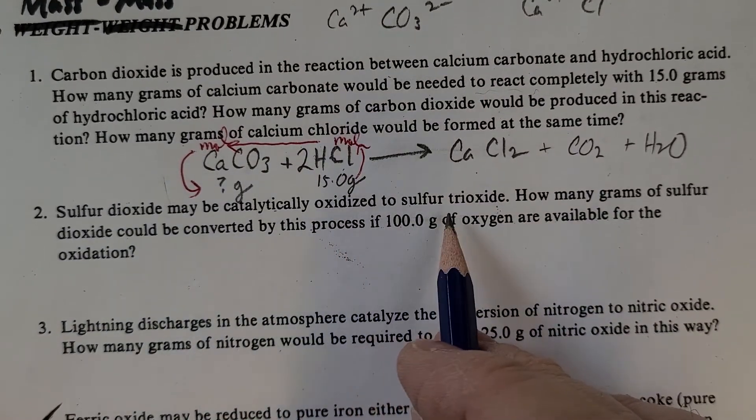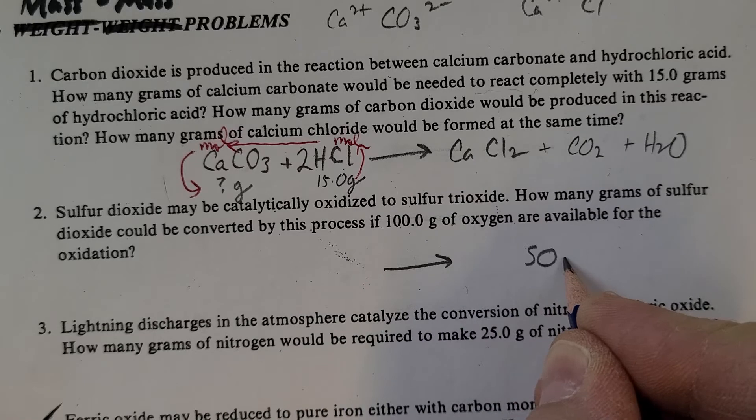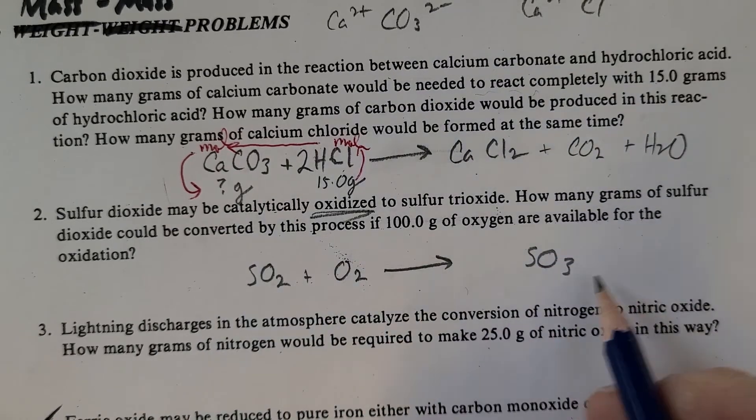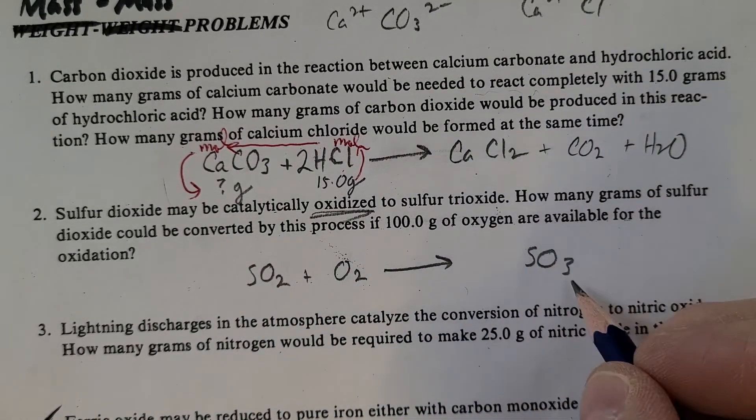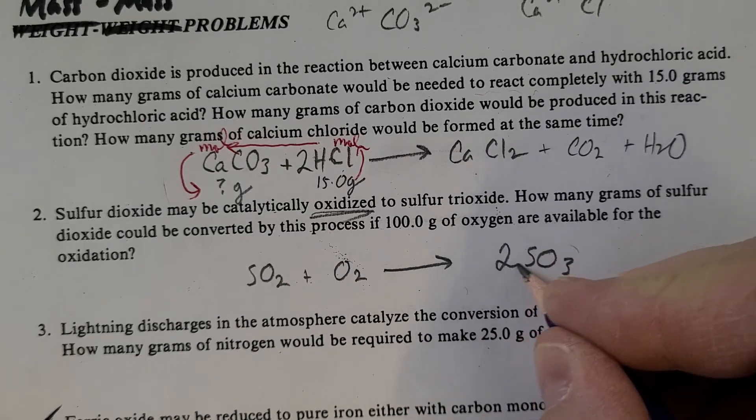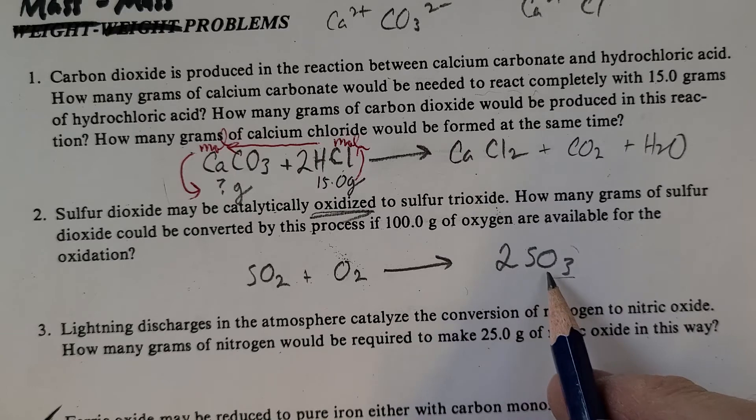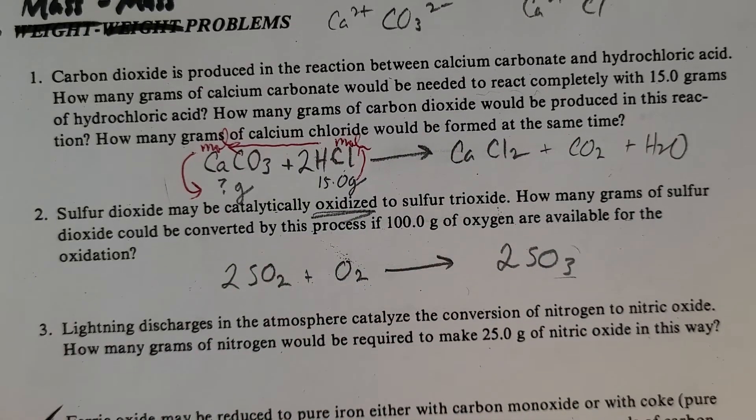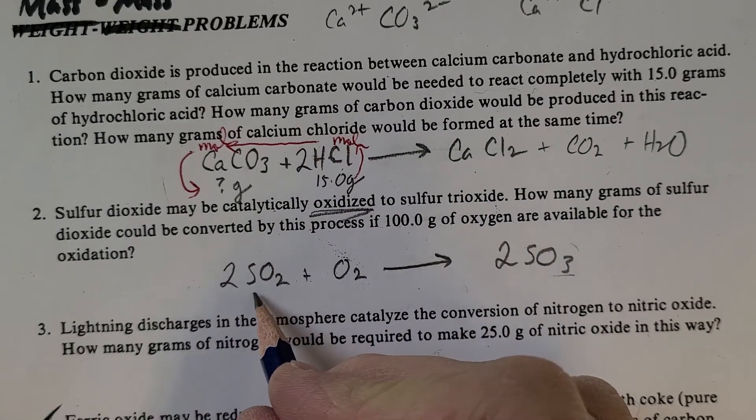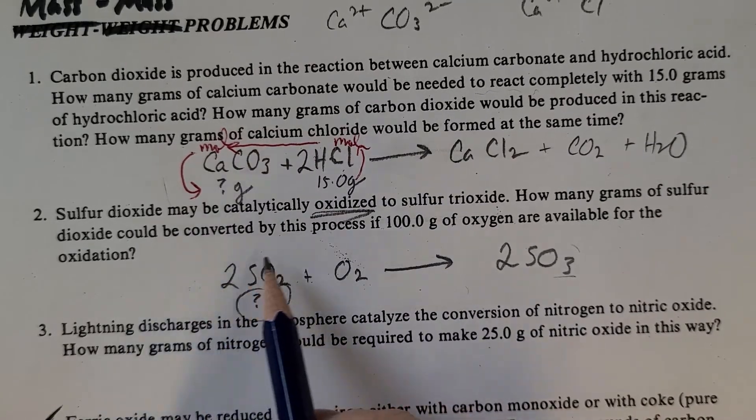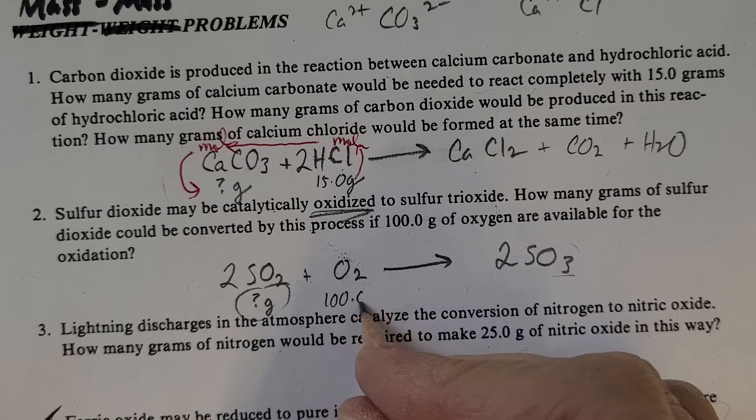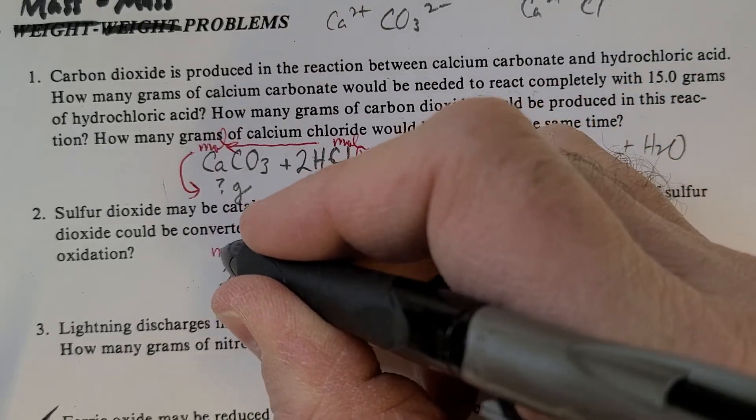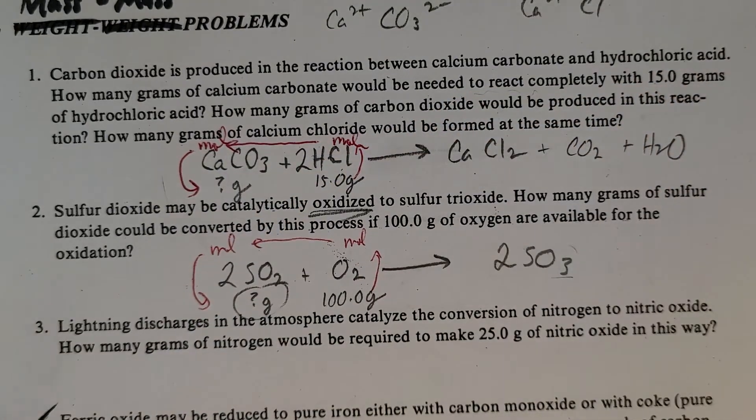Sulfur dioxide may be oxidized to sulfur trioxide. Oxidized means we're going to be combining it with O2. Of course, this doesn't work. Four oxygens, three oxygens, so we have an uneven number. Double it. So now we're going to have two S's there. So I have to put a 2 there. It's going to give us 2 times 2 is 4, 5, 6. There we go. It's all balanced. How many grams of sulfur dioxide could be converted if we have 100 grams of oxygen available? So yes, it's very similar to the previous one. Moles, moles, and then grams.